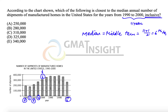The sixth bar is our median. The sixth bar is slightly more than 300,000, so the answer should be slightly more than 300,000. It's not at 325,000 — it is definitely less than 325,000 — which means the answer should be 310,000. So the answer to the question is option C.